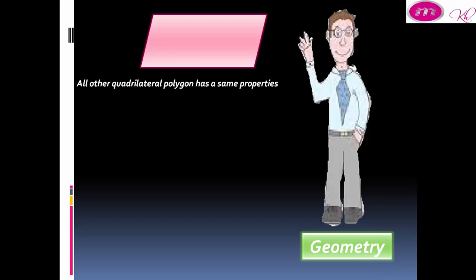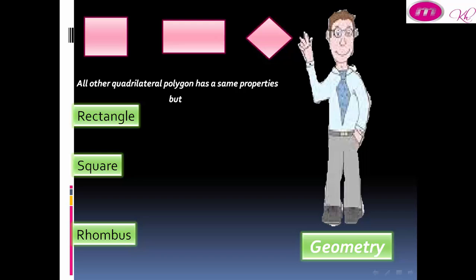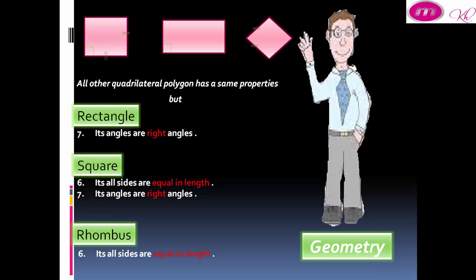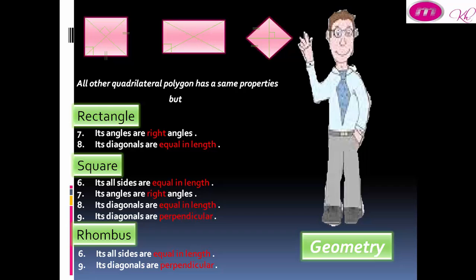All other quadrilateral polygons have the same properties, but in square and rhombus all sides are equal in length. In rectangle and square, its angles are right angles. In rectangle and square, its diagonals are equal in length. In square and rhombus, its diagonals are perpendicular.